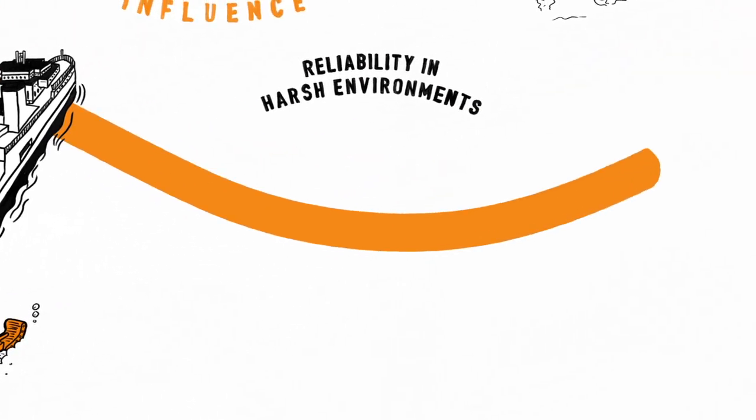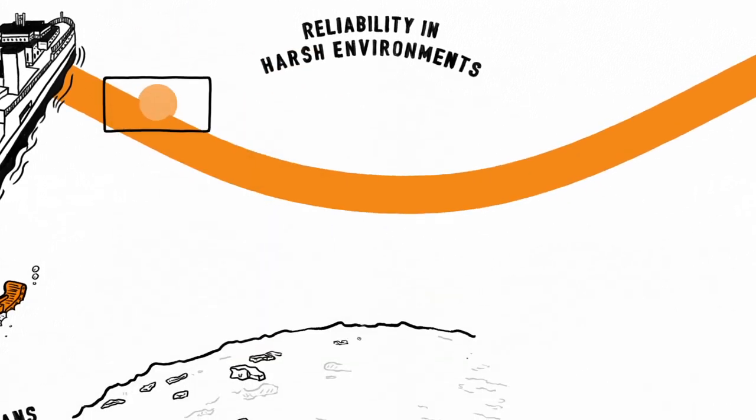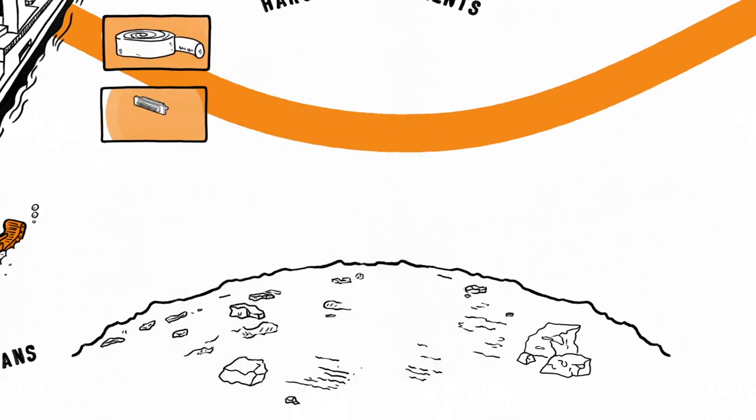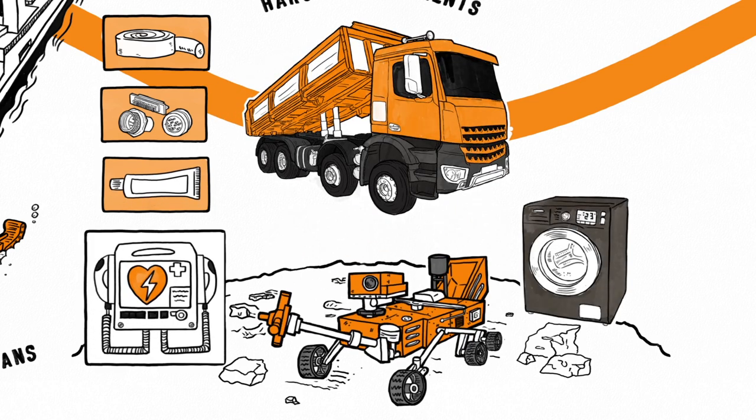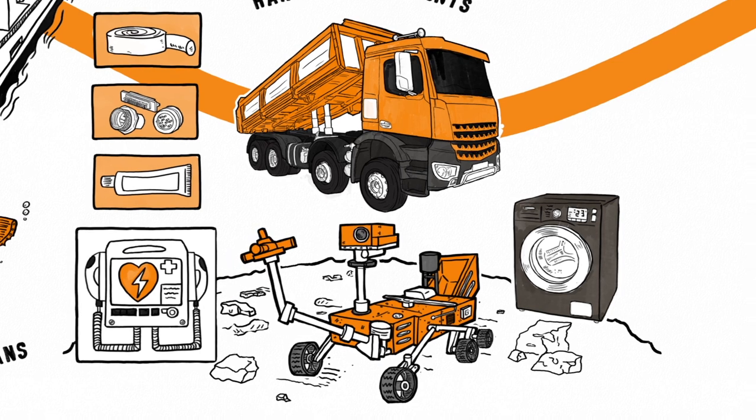Harsh environments needed power and signal delivery. Ingenuity led to heat-shrink tubing, hermetic sealing technology and gel sealants, all used today in everything from defibrillators to the Mars Curiosity rover for safe, reliable operation.